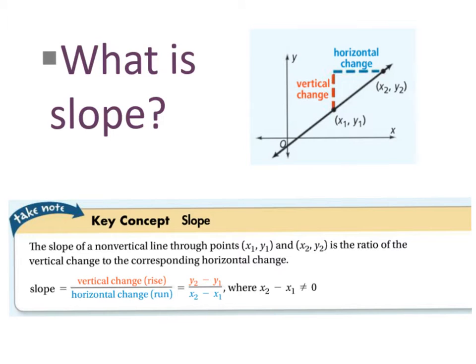In this video, you will learn what slope is and how to calculate it. Slope is the ratio of the vertical change to the corresponding horizontal change, or a way of measuring the steepness of a line.